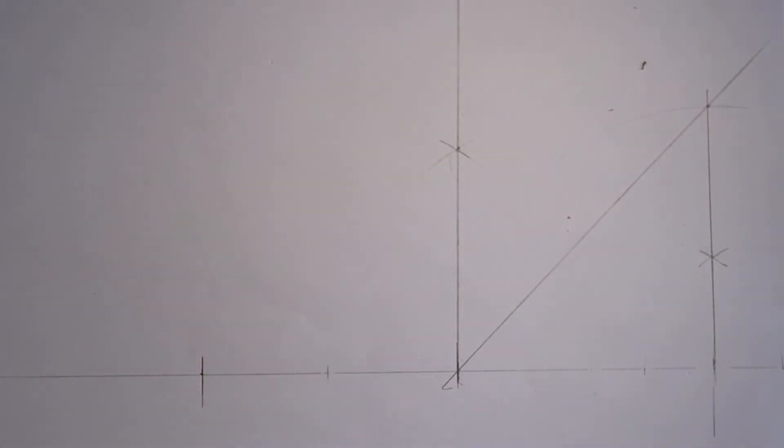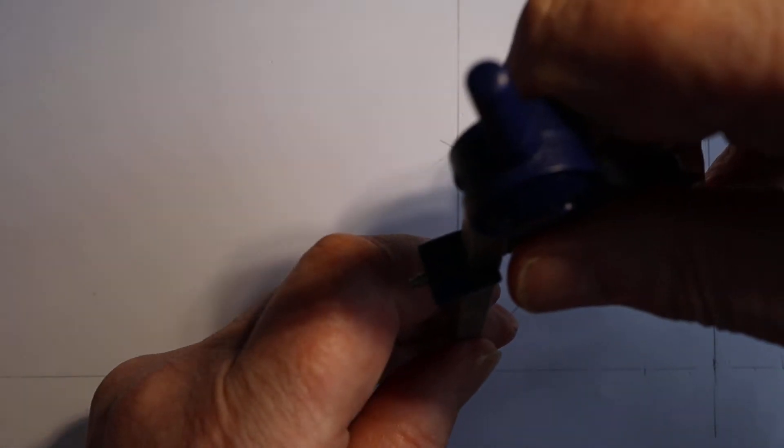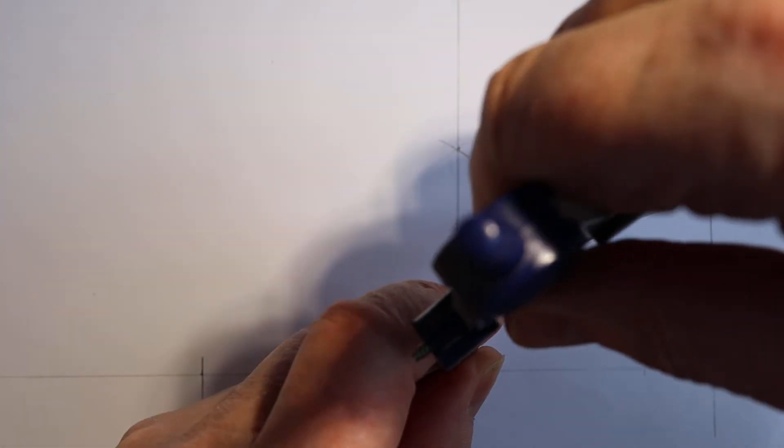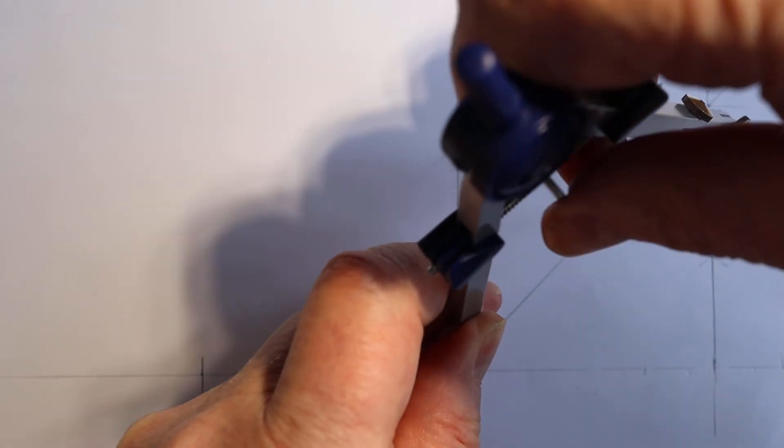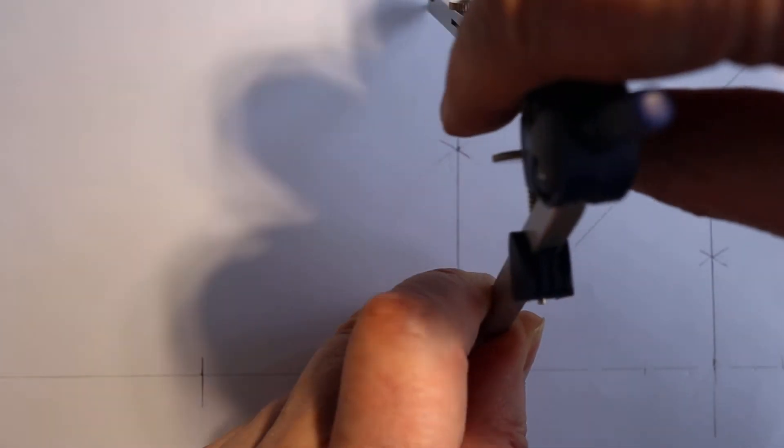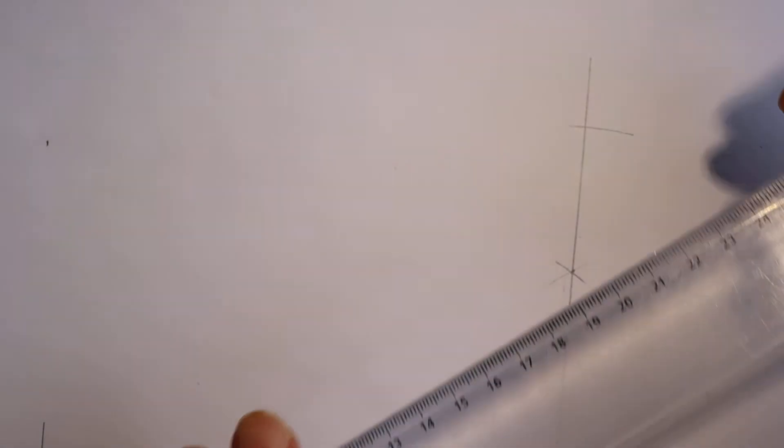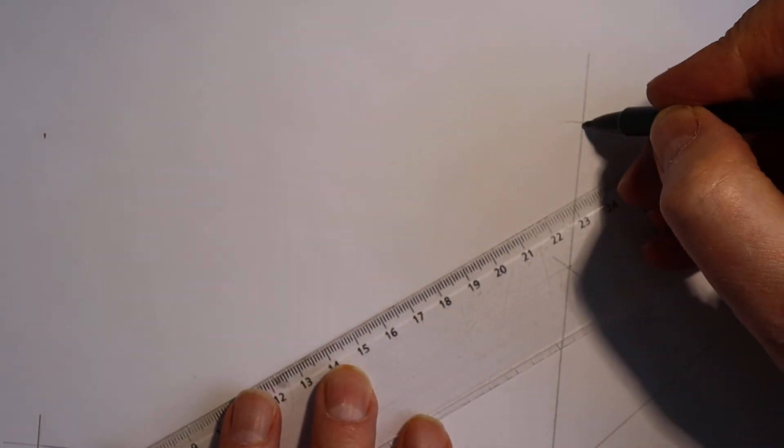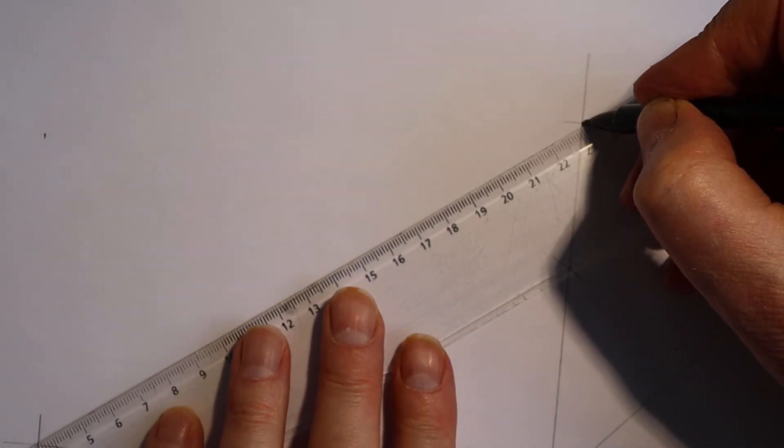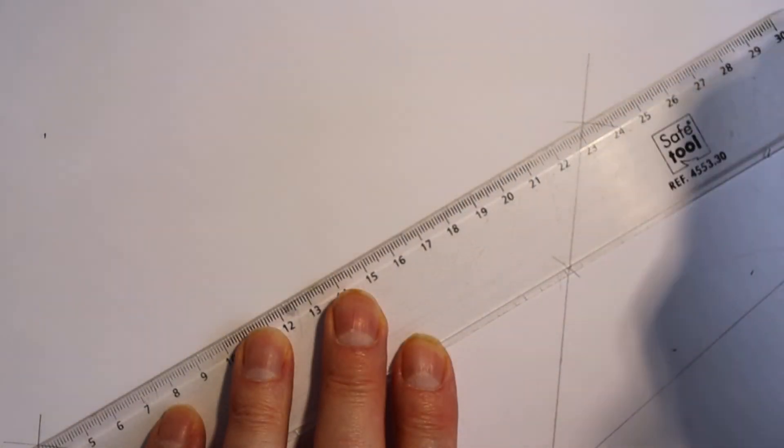So if I can now stretch my compass out, and this may be a little tricky for some people. There we are. Now I've got my root 2 on that length there, and I have my root 6. Good.